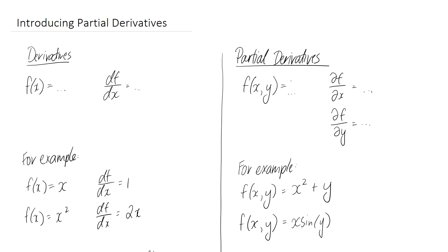When we take the derivative of a multivariate function, we have to specify which one of the independent variables we want to take the derivative with respect to. That's why it's a partial derivative — because it's only taking the derivative with respect to one of these independent variables. The other thing to note is that the notation changes slightly: rather than writing a d, we write this symbol here which represents the partial derivative, rather than it being the complete derivative like we had previously.